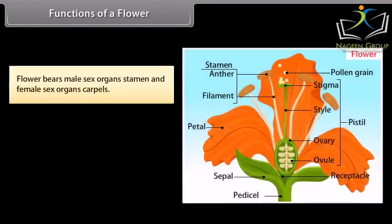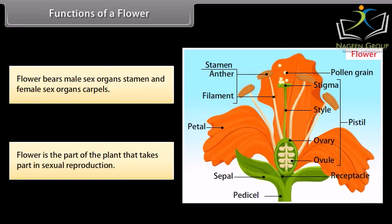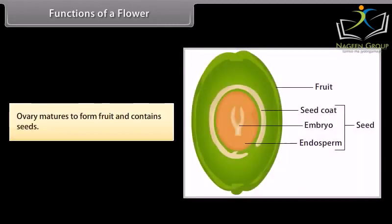Functions of a flower. Flower bears male sex organs stamen and female sex organs carpels. Flower is the part of the plant that takes part in sexual reproduction. Ovary matures to form fruit and contains seeds.